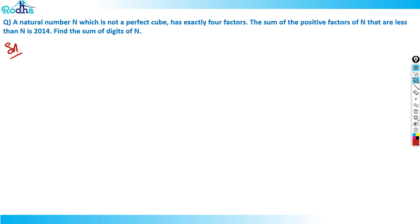Any natural number with four factors - how do you write this? Four factors means it should be in the form of either p cubed (because power plus one gives four factors), or it could be if I split four as two times two, basically two prime numbers p1 and p2.